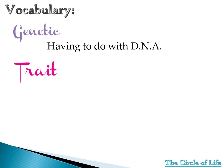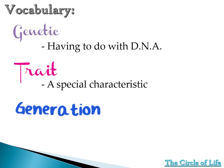Fifth word, we have trait. Trait is a special characteristic. Examples of these are the color of your hair, the type of your hair, and as well as your eyes. What's the color of your eye? And lastly, generation — all the people of the same age, group, or time.